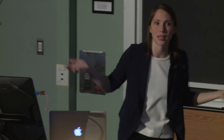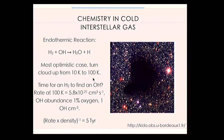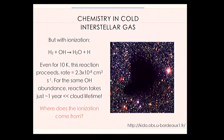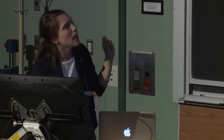If you tried to wait for molecular hydrogen to find oxygen and make water, you'd wait 5 trillion years even at 100 Kelvin — longer than the age of the universe. But if you ionize the H₂, you can form an unstable H₃O⁺ ion, which can recombine with free electrons to make water. This only takes a year — which is astronomically instantaneous. This is one of the main ways water forms in dark clouds.